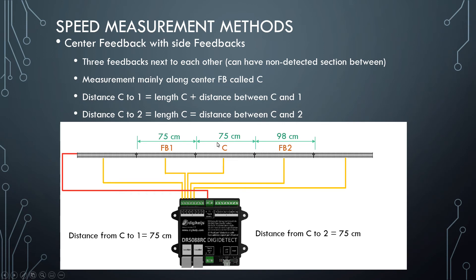The main measurement is along the center feedback called C. If the train is traveling from right to left, the first measurement will start when feedback C is activated, and then the measurement will finish when FB1 is activated. The loco then drives on until C is released and then it's ready for the next measurement.